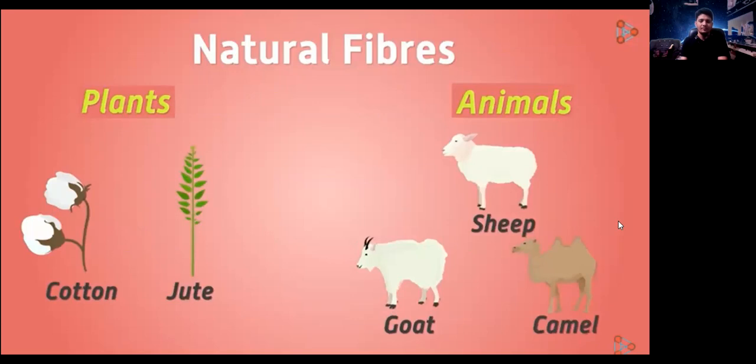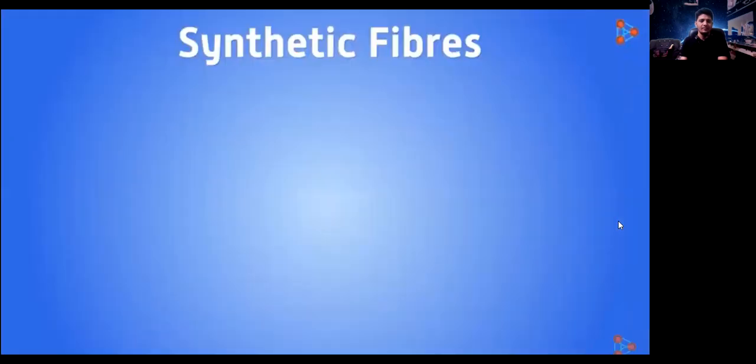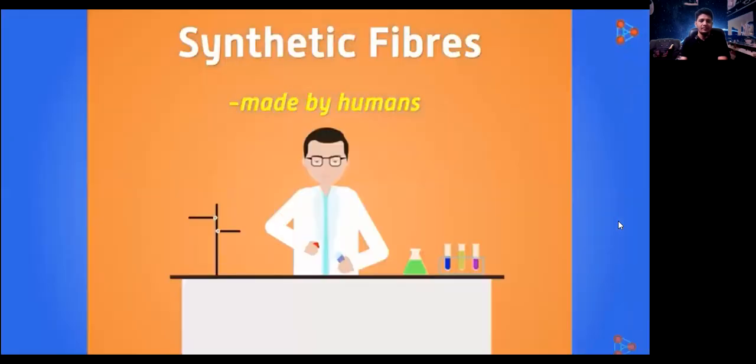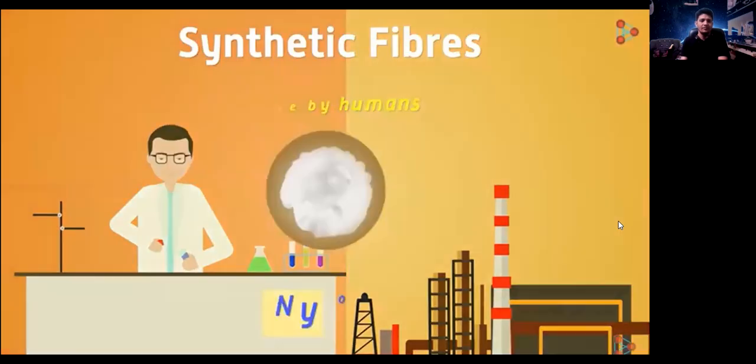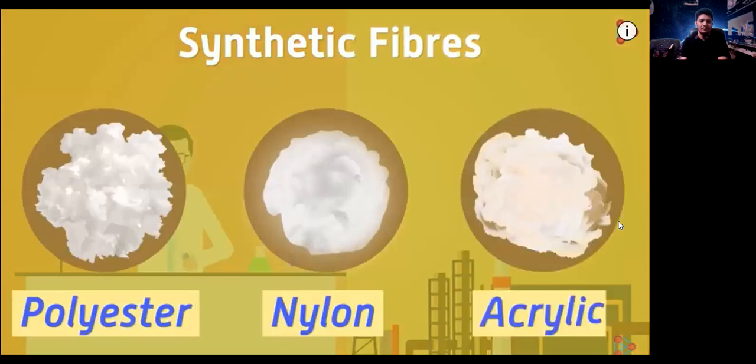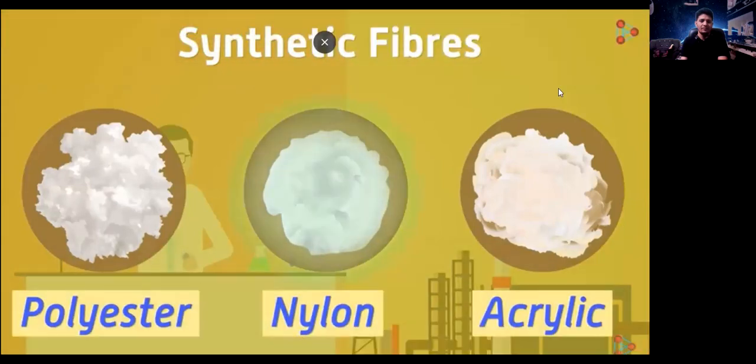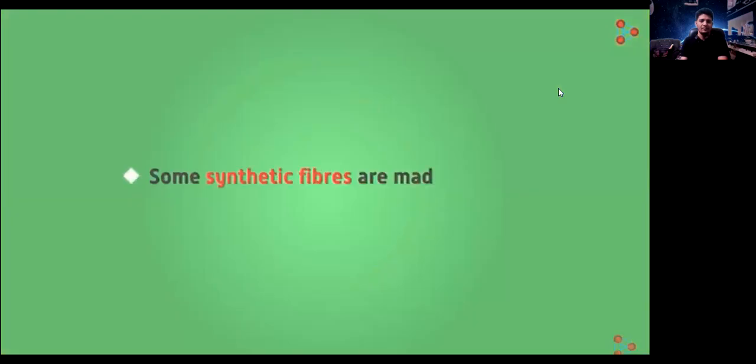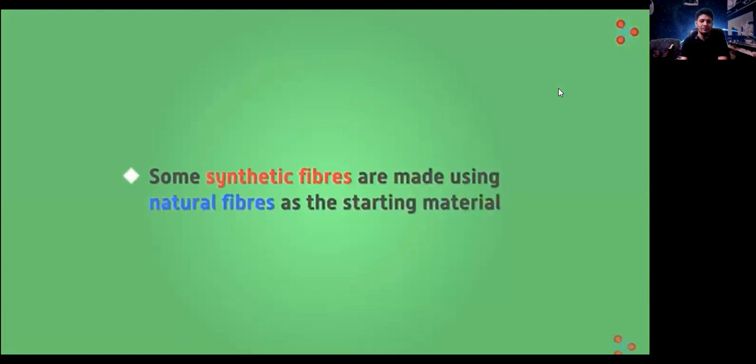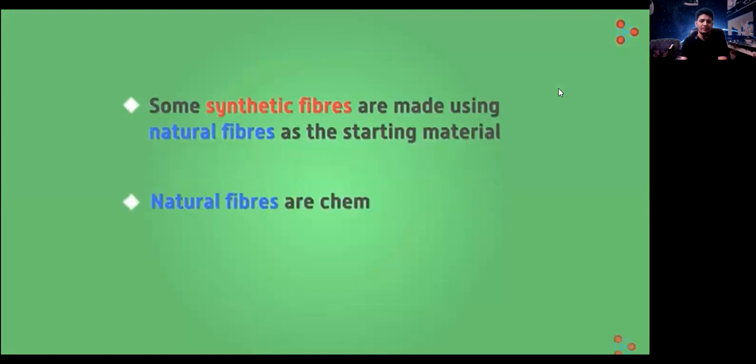In contrast to these natural fibers, the synthetic ones are made by us in the laboratories or industries to be precise. Nylon, polyester, acrylic, all these fibers are the best examples to study the synthetic fibers category. Lastly, do you know that some synthetic fibers are made using natural fibers as the starting material? Yes, it's true. Natural fibers are chemically processed and modified significantly to gain another category of fibers. These are called semi-synthetic fibers.